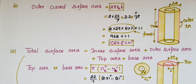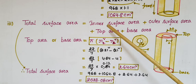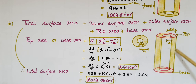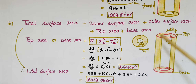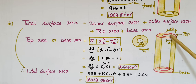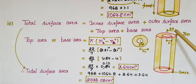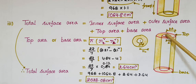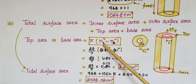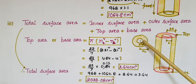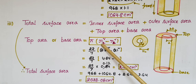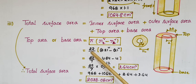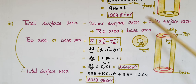Now we find the total surface area, which includes inner surface area plus outer surface area plus top area plus base area. The top and base areas are equal. Each is the area of the annular ring — the bigger circle area pi r2 squared minus the smaller circle area pi r1 squared. So top area equals pi into (r2 squared minus r1 squared).